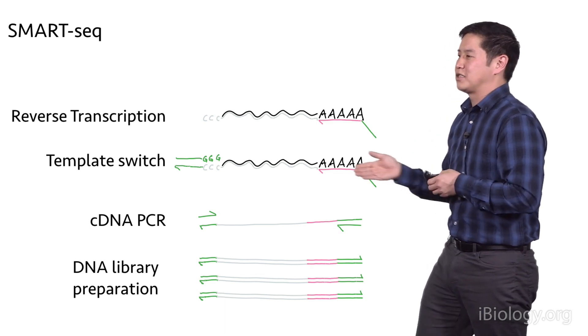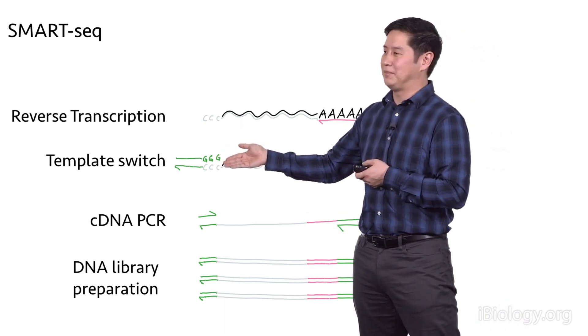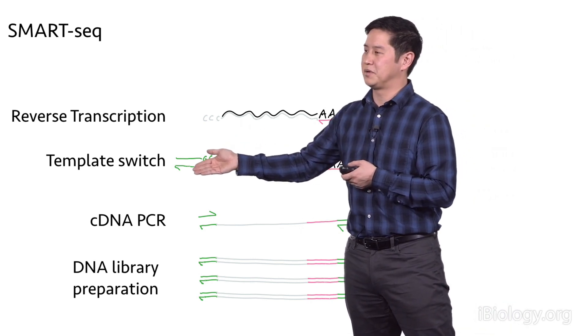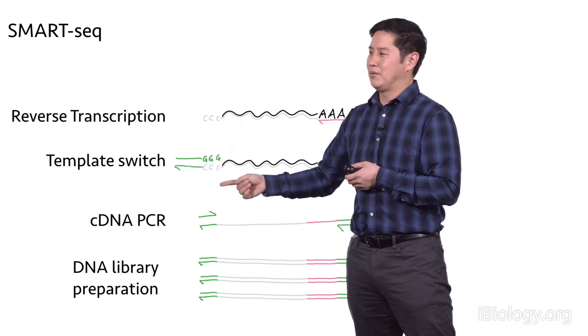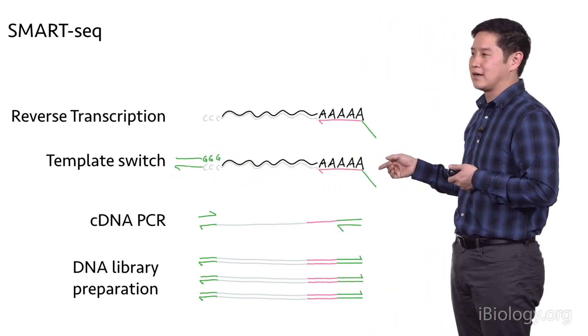and then the reverse transcriptase will use this template switch oligo as a template and continue the reverse transcription reaction so that you wind up with a tagged cDNA that has handles on both ends depicted in green here.